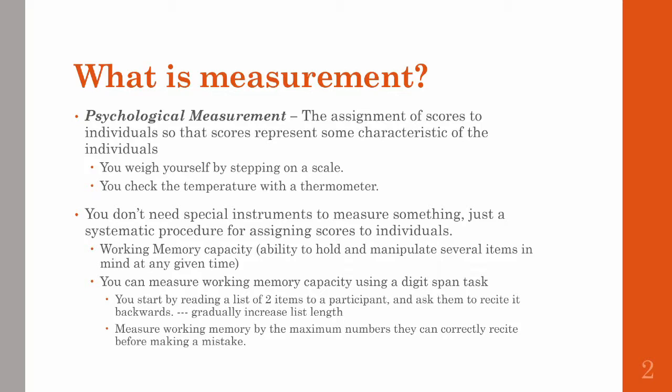You can use what's called a backwards-digit span task. In this task, assuming that you're the experimenter, you would read a list of two numbers to your participant. Then you ask the participant to recite them out loud in a backwards order. If they get that right, then you do it again and you increase the list of numbers to three. You keep gradually increasing the list of numbers until they make a mistake. Then the maximum number of items that they can recite backwards without making an error is kept as their working memory capacity.